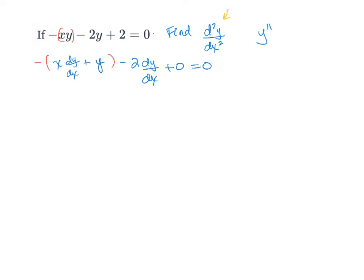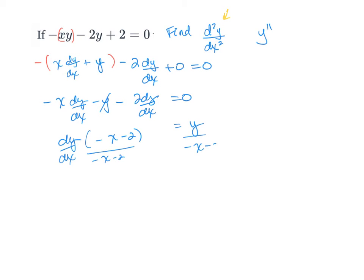So the first is x times the derivative, which gives us -x dy/dx minus y minus 2 dy/dx equals 0. You're going to add y to both sides, and then we can actually take out dy/dx. And you will get -x minus 2, which you can divide by both sides. And that is what dy/dx equals: y over (-x - 2).